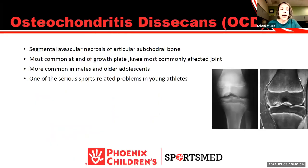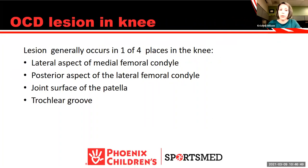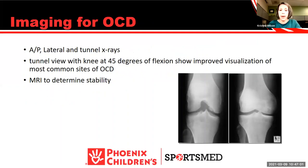Outside of the hip, osteochondritis dissecans (OCD) is something we commonly see in kids — it can occur in the knee. On imaging, you see a half-moon darkening in the femoral condyle — the medial femoral condyle is more common. On MRI, you can see joint fluid tracking under the fragment — an unstable OCD. OCD can also be seen on the lateral femoral condyle, the posterior aspect of the lateral femoral condyle, on the patella, or in the trochlear groove. We typically do MRIs on all our OCDs to assess stability, not just to look at size.